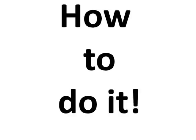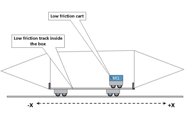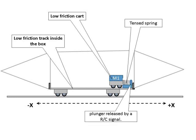Now we will show you how to do it. We put the low friction track inside the box. We position the low friction cart at the end of the track. We position the tensed spring so it is ready to push the cart.